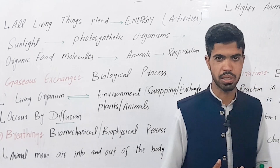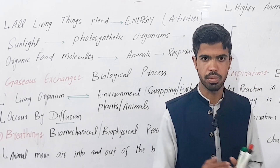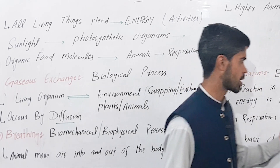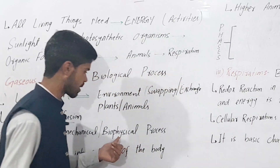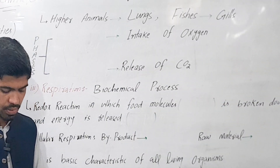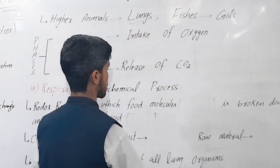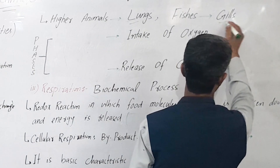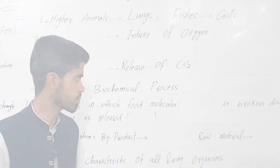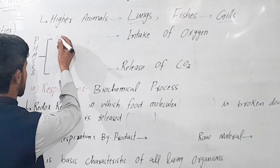This biophysical or bio-mechanical process involves the ribs and the diaphragm. The contraction and relaxation of these structures is really important. This biophysical or bio-mechanical process occurs in higher animals through lungs.